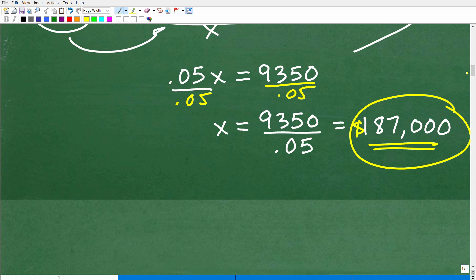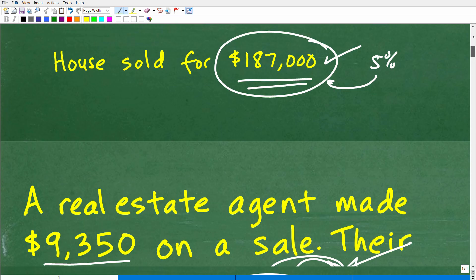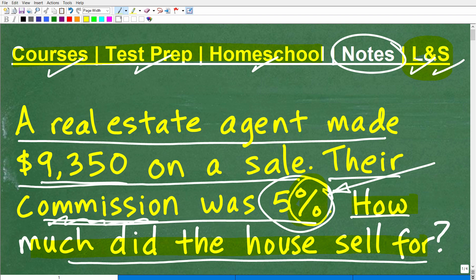You could always check your work. You could be like, okay, let me see here, is 5% of $187,000? So you take that 5%, go 0.05, and multiply by that $187,000. Is it in fact 9,350? You'll see that it is. So you can always double-check your work if you're not fully confident that you got the right answer.